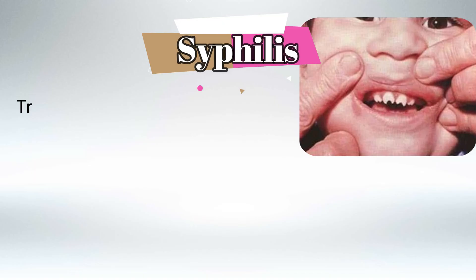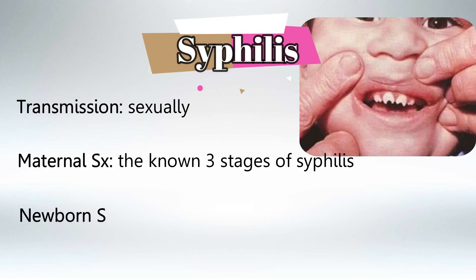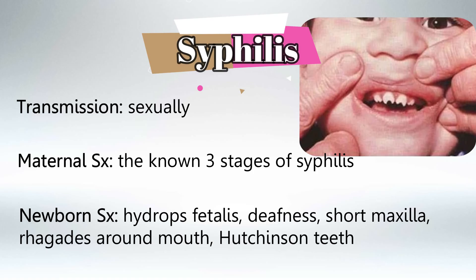S is for syphilis, which transmits sexually and causes the three stages of syphilis for the mother. I will go more into syphilis symptoms and diagnosis in another video. The newborn would have hydrops fetalis, deafness, short maxilla, rhagades around the mouth, and Hutchinson teeth. Remember that congenital syphilis symptoms appear around the orifices of the face: for the nose there would be saddle nose and sniffling; for the mouth, short maxilla and Hutchinson teeth; and in the ears, deafness.